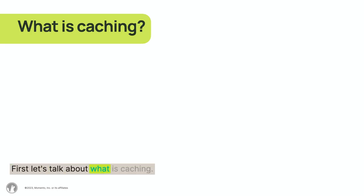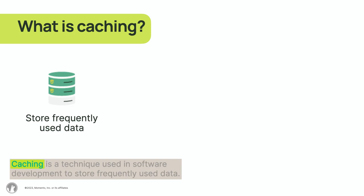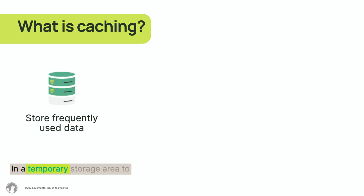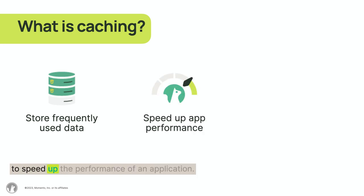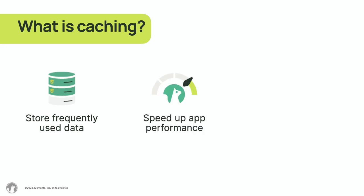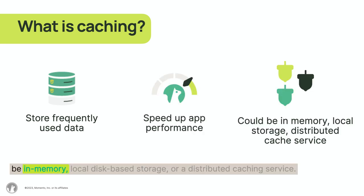First, let's talk about what caching is. Caching is a technique used in software development to store frequently used data in a temporary storage area to speed up the performance of an application. The storage area might be in-memory or local disk-based storage.